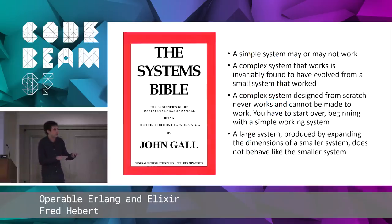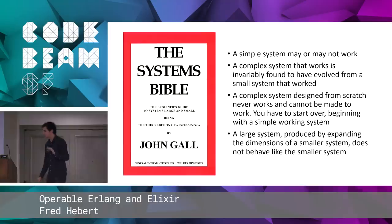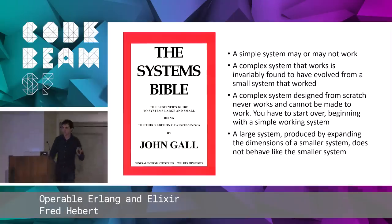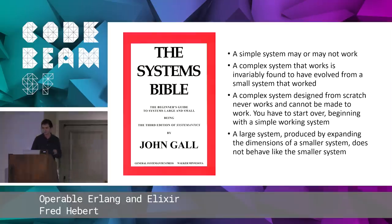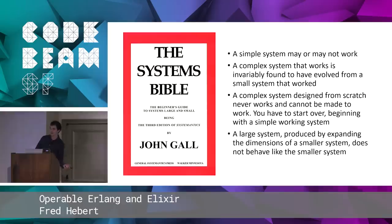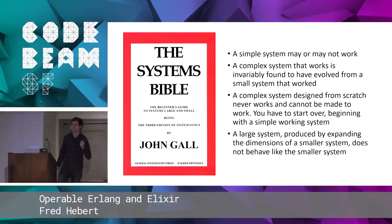I'm going to use quotes from the Systems Bible by John Gall. It's a fantastic book full of good but sarcastically mentioned concepts. The first one: a simple system may or may not work, but a complex system that works is invariably found to have evolved from a small system that worked. A complex system designed from scratch never works and cannot be made to work — you have to start over beginning with a simple working system.